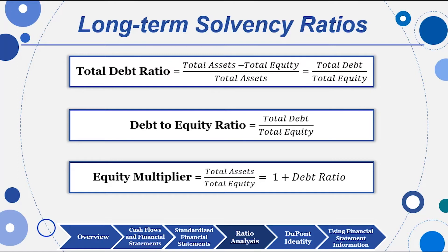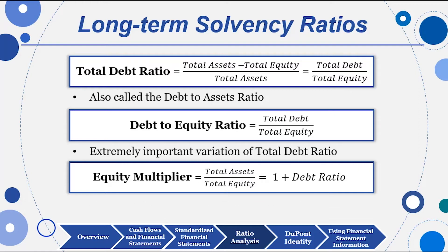The total debt ratio is total debt divided by total assets — also called the debt-to-asset ratio. Debt-to-equity is simply total debt over total equity. The equity multiplier equals one plus the debt-to-equity ratio — that's the easy way to remember it. Since assets equal debt plus equity, dividing by equity gives you one plus debt-to-equity. Remember: 'TO' means divide by in mathematics, so debt-to-equity is just debt divided by equity.